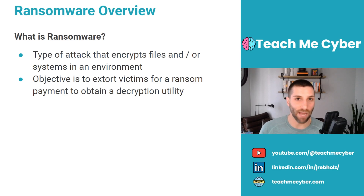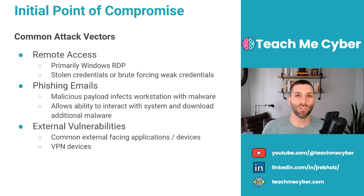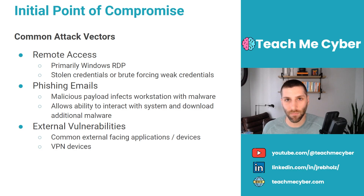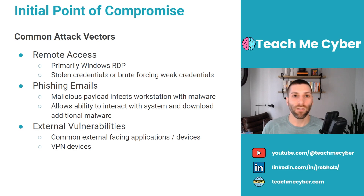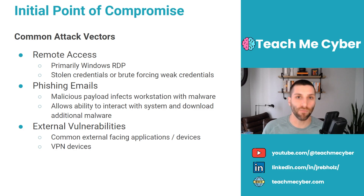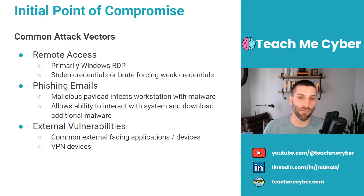There are a lot of steps that have to happen before the attacker can get to ransomware deployment. It all starts with an initial point of compromise — attackers have to break into the environment first. Some of the most common mechanisms are three things. Number one: remote access. Windows Remote Desktop is one of the most popular ways attackers do this, essentially brute forcing their way in by guessing usernames and passwords. If you're using Windows RDP with weak passwords, this is a very common way attackers can break in.